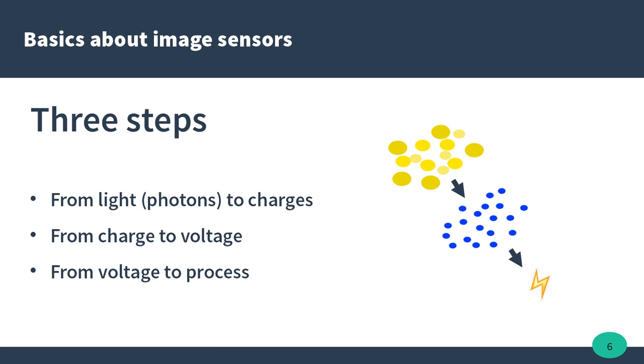The first one consists in optoelectrical conversion. In a photo element, photons are converted into charges. Then the charges are measured and turned into voltage. Finally, the signal outputs into eventual post-processing, rendering and recording steps.